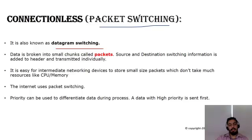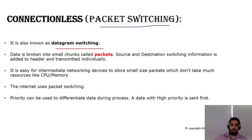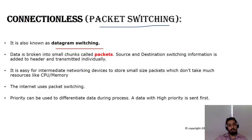In connectionless switching, a large amount of data is divided into smaller chunks. Those chunks are added with source and destination MAC addresses and transferred over the network to the destination. Connectionless switching is faster compared to other types because intermediate devices only have to process small chunks at a time rather than a large block.